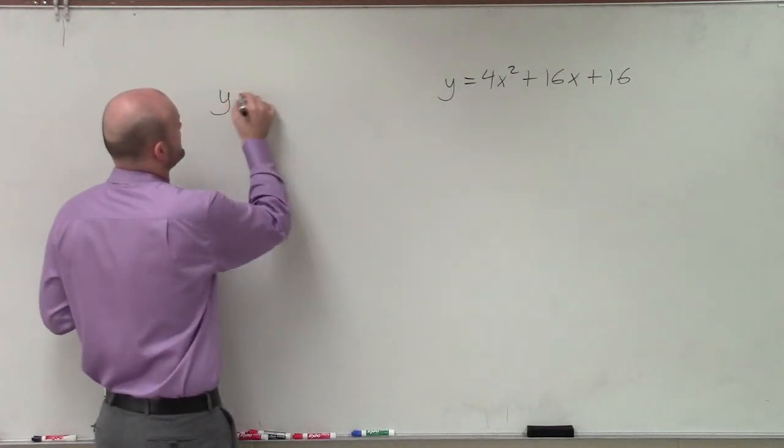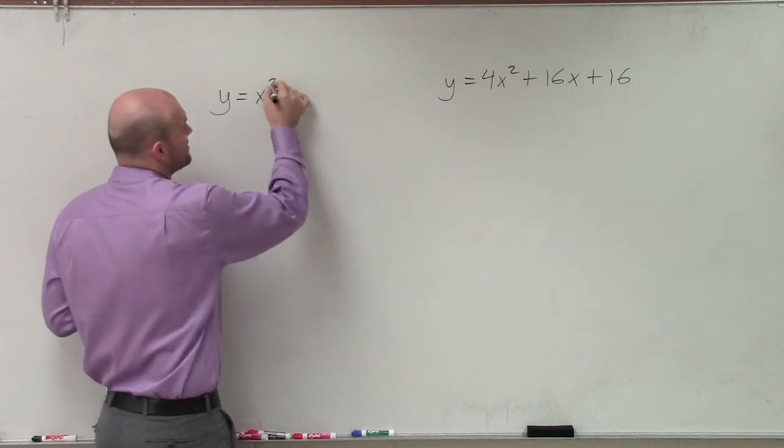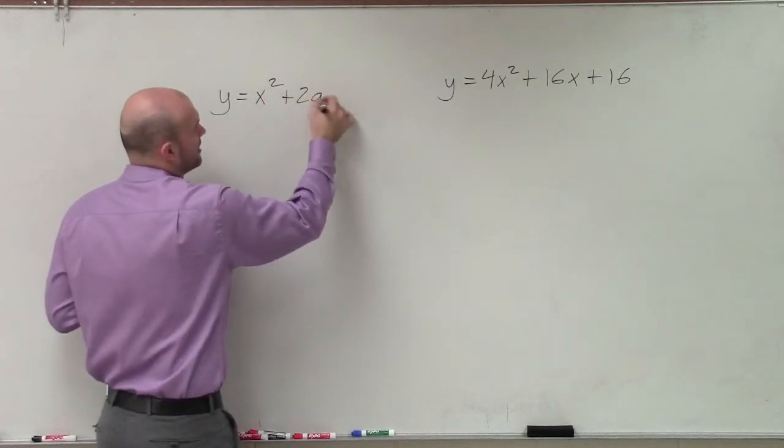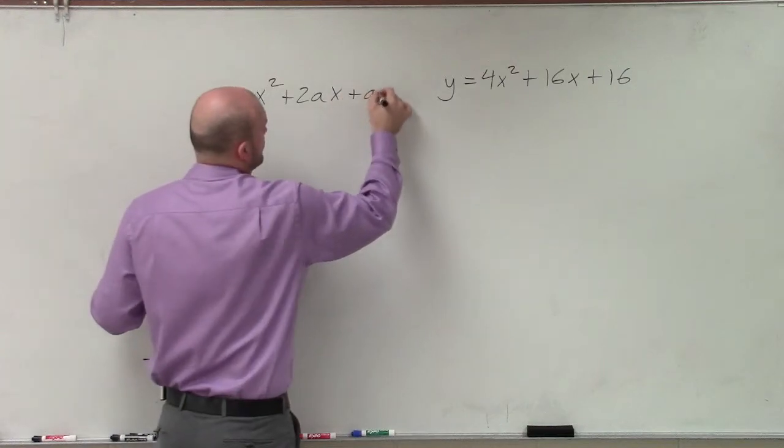So normally, when we're talking about perfect square trinomial, we a lot of times do not have a coefficient for our x squared. But our a actually, in this case, would be like this.